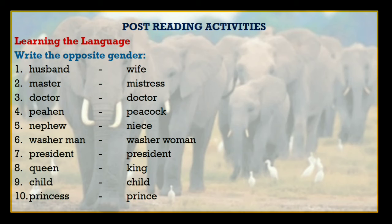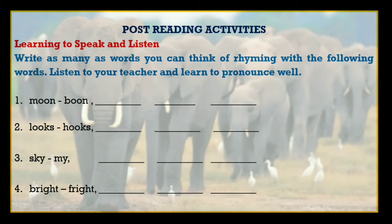This activity is related to learning the language. Let's move ahead. Here the activity is related to speaking and listening. Write as many words as you can think of that rhyme with the following words. Listen to your teacher and learn to pronounce well. Students, here I will pronounce these words — you have to listen carefully and then speak their rhyming words.